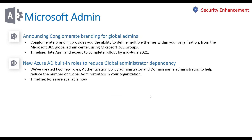The next section is related to admin updates in general. The first one is conglomerate branding for global admins where you're able to provide more than just one theme for custom branding within the organization. Traditionally this has always been one, but now Microsoft allows you to apply to 365 groups — up to five within the tenant. This is great for M&A activity with multiple organizations under the same tenant. One caveat: doing this will remove the background image for users who aren't assigned to any of these branded groups. That's coming in late April and expected to complete by mid-June.